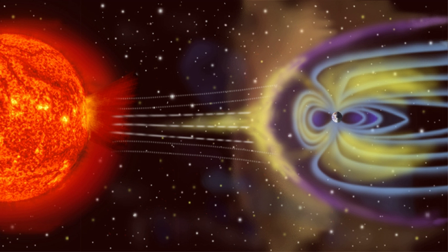A magnetosphere is a region of space surrounding an astronomical object in which charged particles are manipulated or affected by that object's magnetic field.